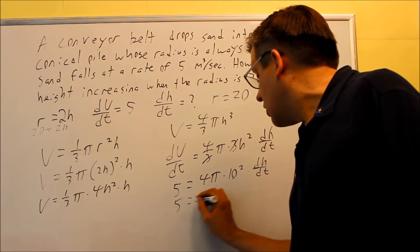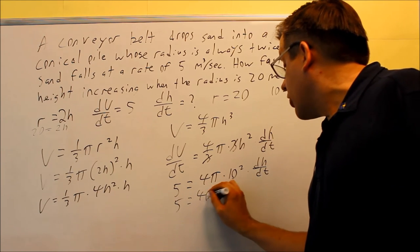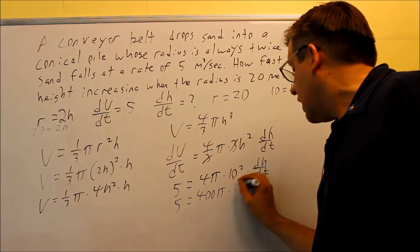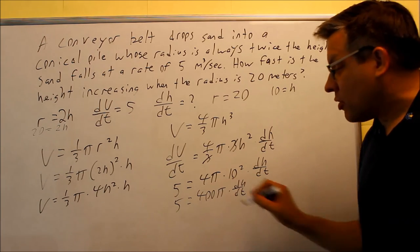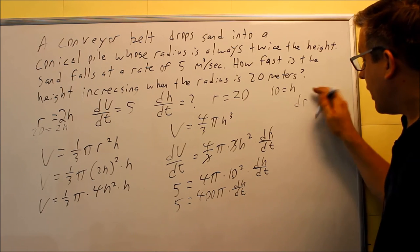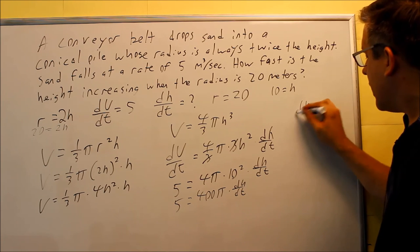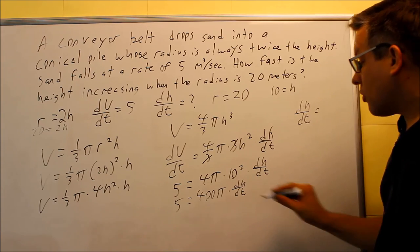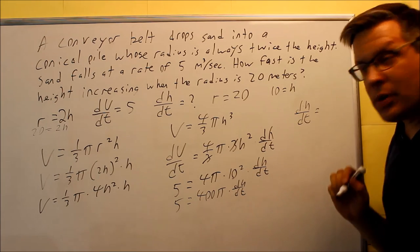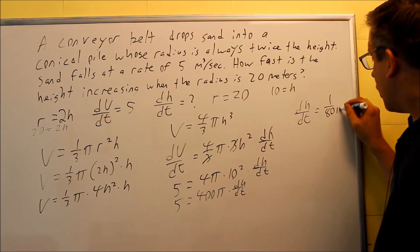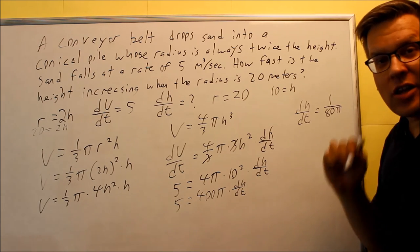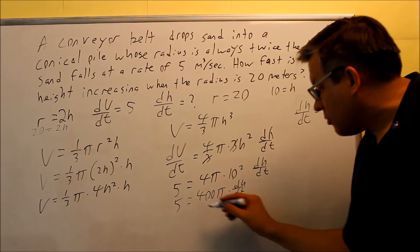Let's simplify this. I'm going to get 400 pi, and then times dh/dt. The last thing you're going to do is divide both sides by 400 pi. And when you do that, I'll just put the answer right here. dh/dt is going to be equal to 5 over 400 pi. That reduces to 1 over 80 pi. The pi has to stay on the bottom because you're dividing both sides by that.